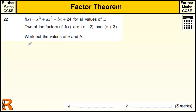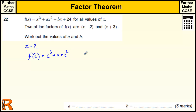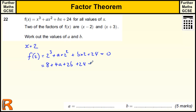So that means if we make x equal to 2, because that solves x minus 2 — when x is 2 we get a 0 there — then when we put that into the function, the Factor Theorem tells us that because it's a factor, f of 2 is equal to 0. All factors make the function equal to 0. So we've got 2 cubed, which is 8, plus 2 squared lots of a, which is 4a, plus 2 lots of b, plus 24 equals 0.